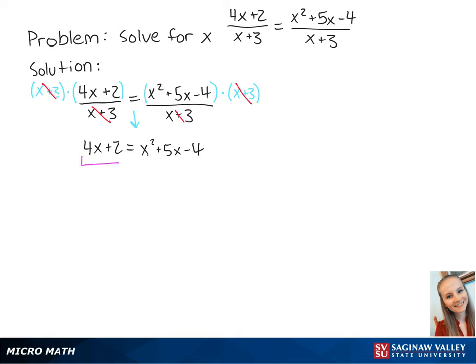To solve for x, we want the left side to be equal to 0. So we're going to subtract 4x plus 2 from both sides of the equation, leaving us with 0 equals x squared plus x minus 6.